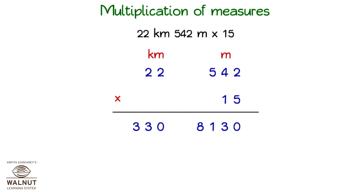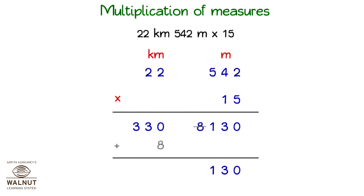Here we have 8 km which we can club with the kilometers, and keep the remaining meters. We add up the kilometers and that is our answer.